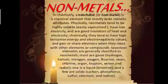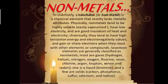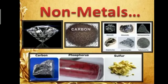In general, we have studied that metals lose electrons and form a cation, while a non-metal gains electrons and forms an anion. Here are some of the non-metals you can see: carbon, diamond, phosphorus, sulfur, antimony, silicon, germanium, boron, arsenic, etc.